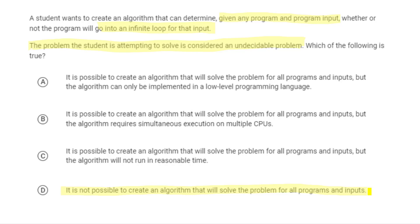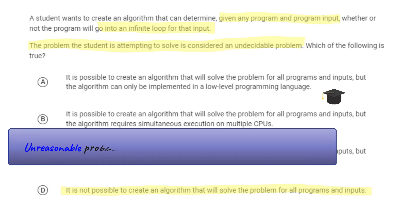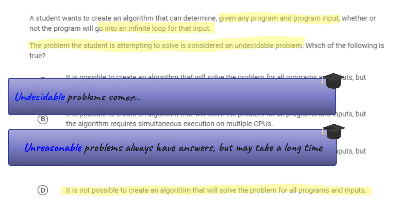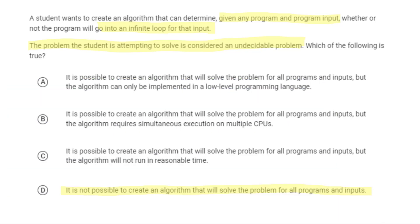Undecidable means there are some situations where a problem does not have an answer. This is very different from an unreasonable time problem. An unreasonable time problem will eventually finish — it might take trillions or quadrillions of years, but it will eventually complete.